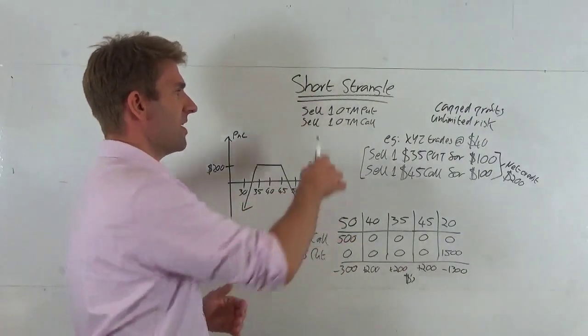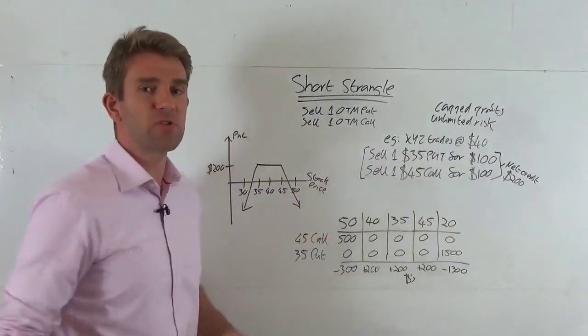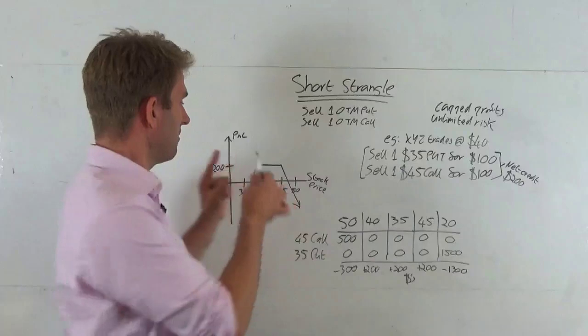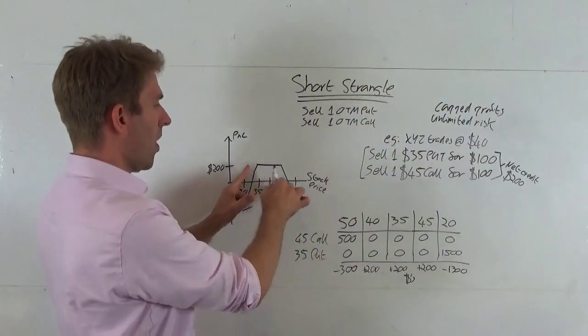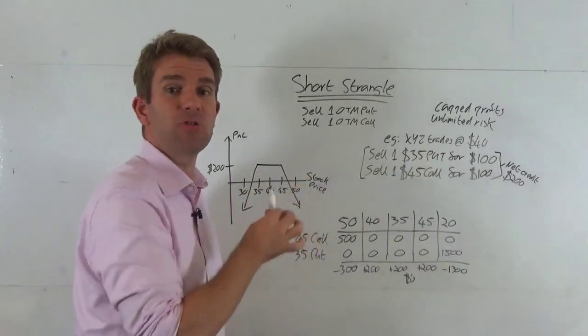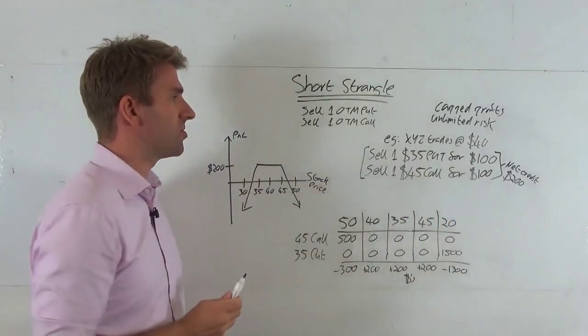You're selling one out-the-money put, one out-the-money call. The difference between this and a straddle is that a straddle you're selling at the money, which gives you that point on your chart. Because it's out the money, this is why you get that flat plateau, because you want the stock to expire in between where you're selling those puts and the call.